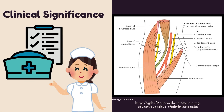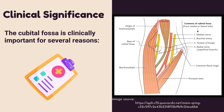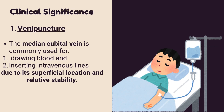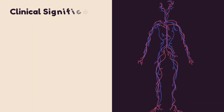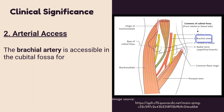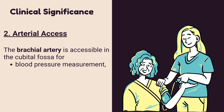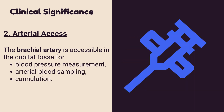The cubital fossa is clinically important for several reasons. For venipuncture, the median cubital vein is commonly used for drawing blood and inserting intravenous lines due to its superficial location and relative stability. The median cubital vein lies superficial to the brachial artery and median nerve. For arterial access, the brachial artery is accessible in the cubital fossa for blood pressure measurement, arterial blood sampling, and cannulation.